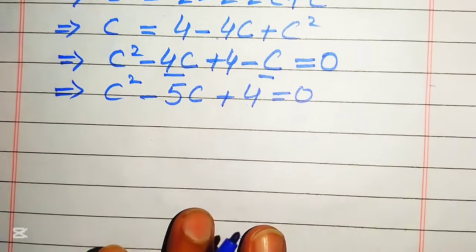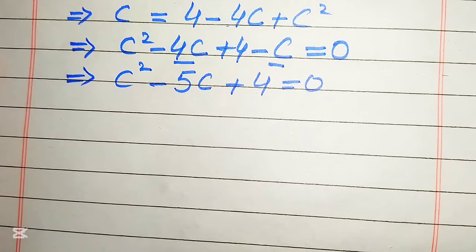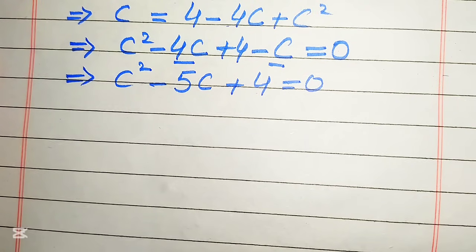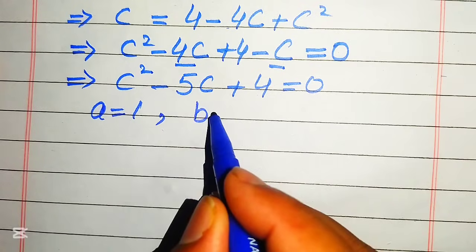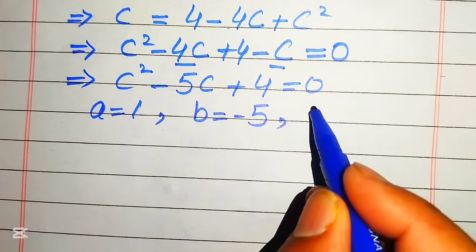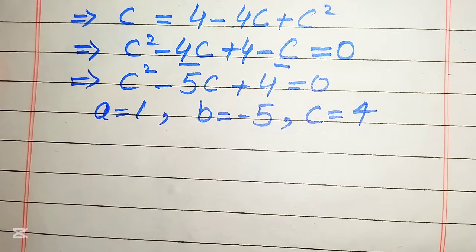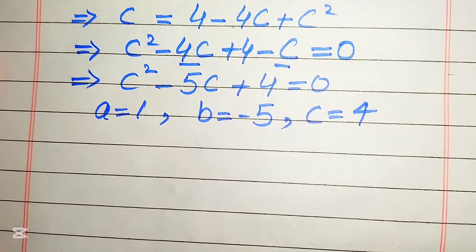This equation is quadratic in c. There are three methods to solve a quadratic equation: the first method is factorization, the second is completing the square, and the third is by applying the quadratic formula. Here I will apply the quadratic formula to solve this quadratic equation. The coefficients of this equation are a equals 1, b equals negative 5, and c equals 4. You can apply whichever method you find easiest.